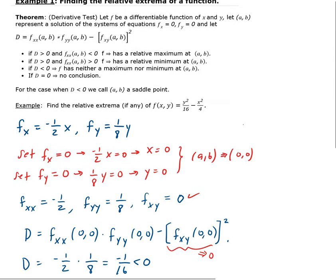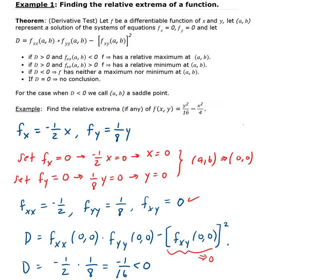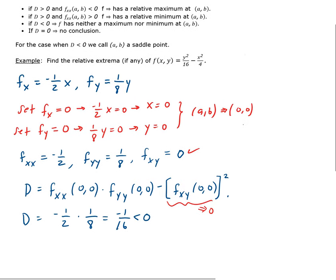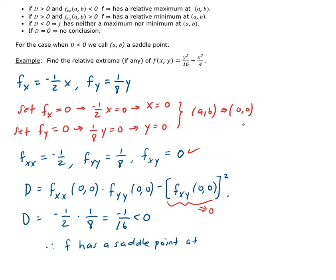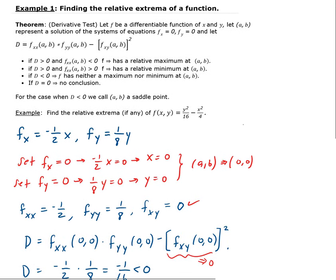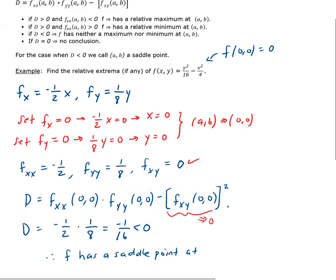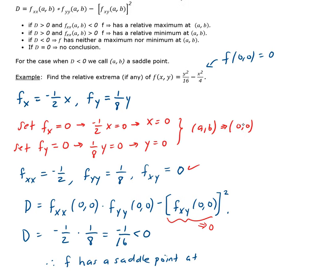Therefore, by our theorem, f has neither a maximum nor a minimum — this is what we call a saddle point. So f has a saddle point at (0, 0). If we substitute (0, 0) into the function we get z equals 0, so f has a saddle point at the origin, which corresponds to z equals 0.